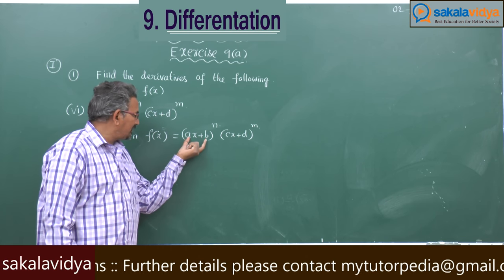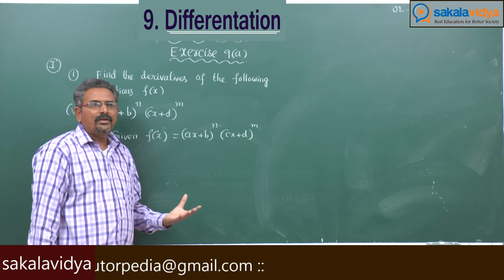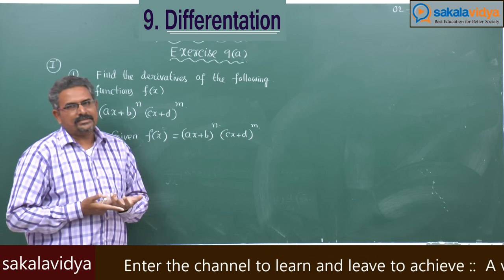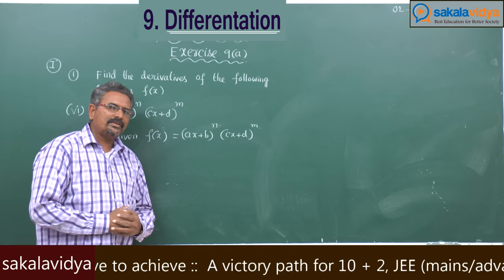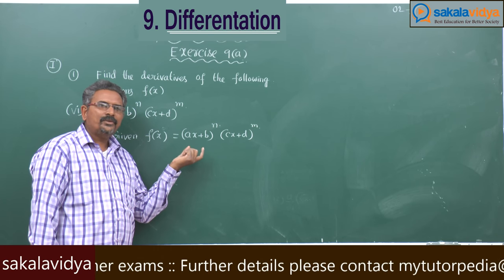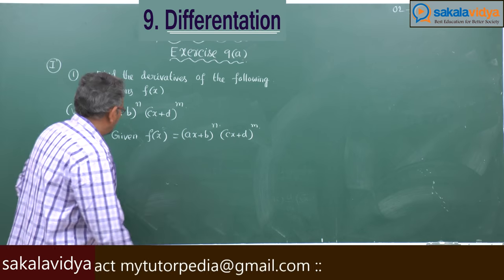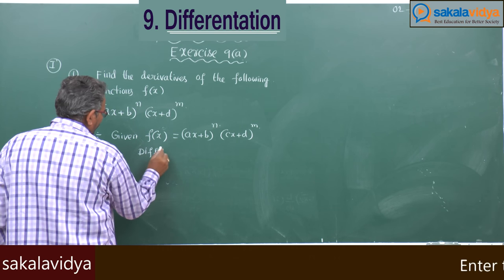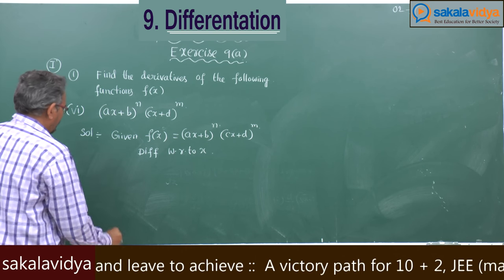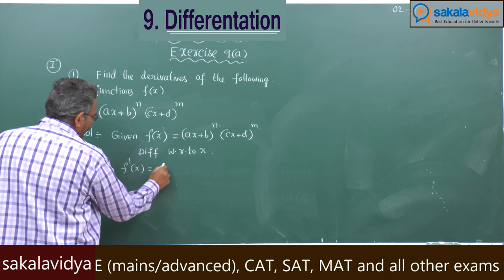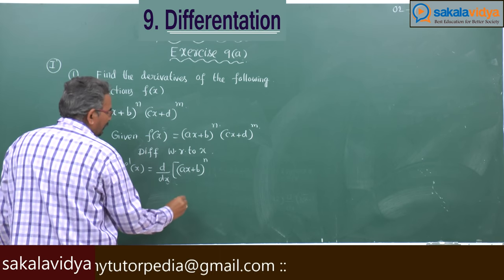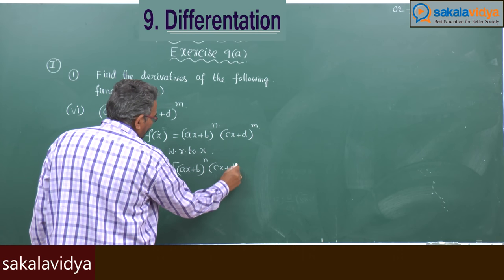Let us imagine this as u^n · v^m. The derivative of u^n with respect to x is n · u^(n-1) · du/dx. First, we apply the product rule at the initial stage. Differentiating with respect to x, we get f'(x) = d/dx of (ax+b)^n · (cx+d)^m.